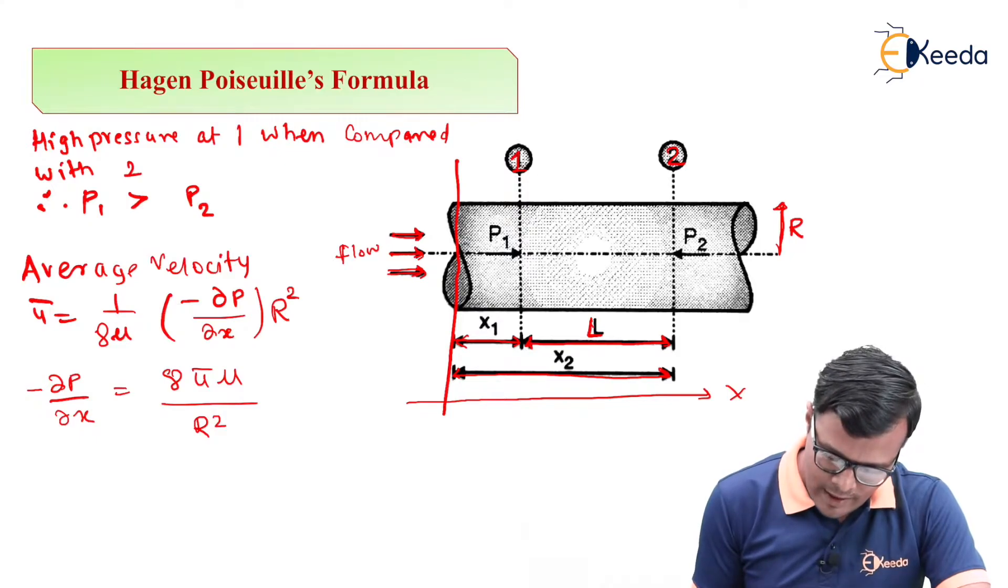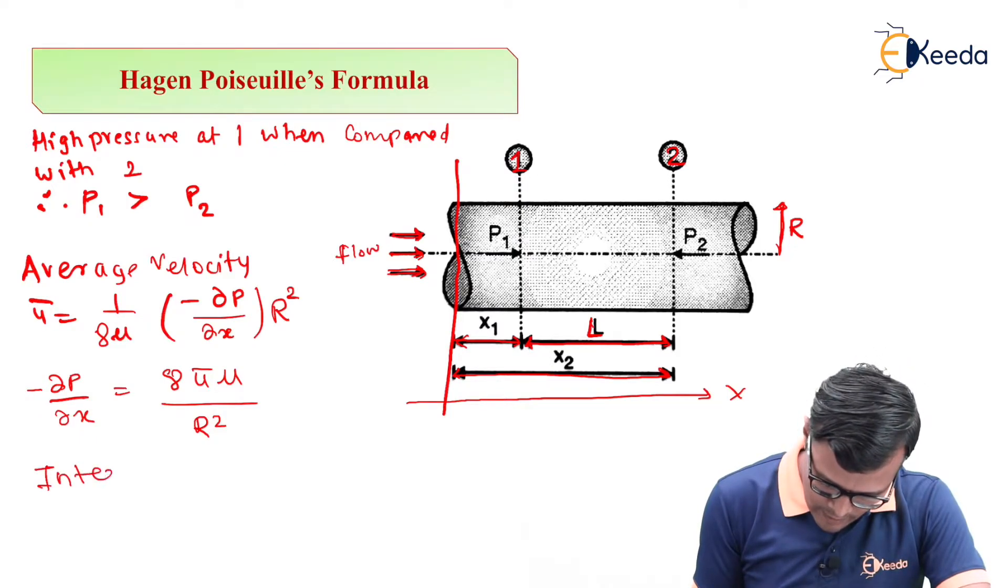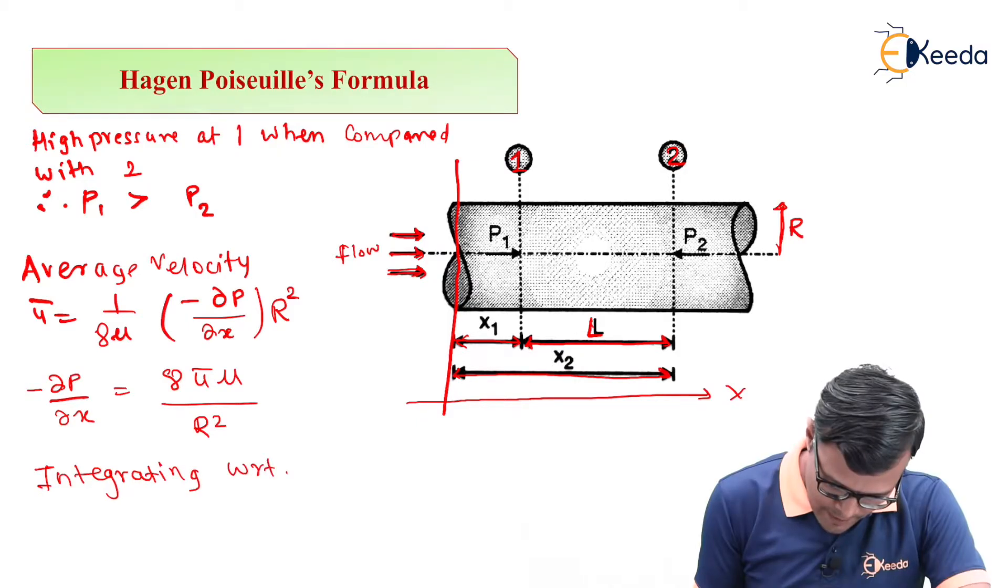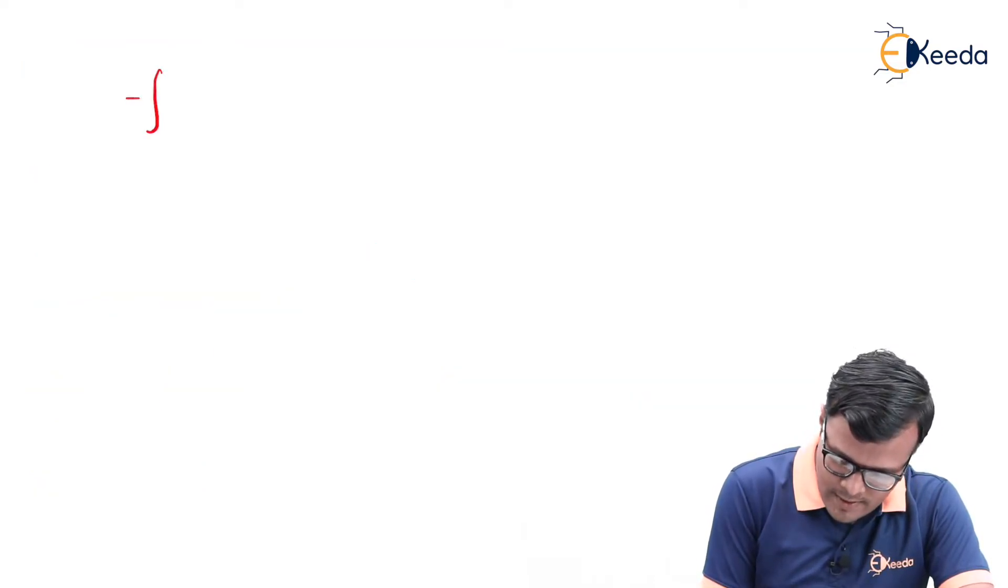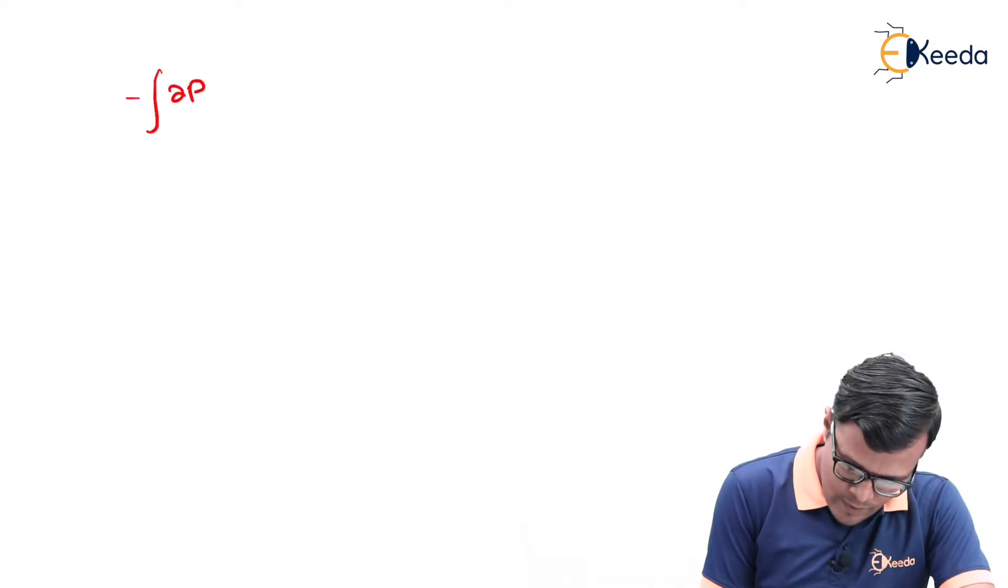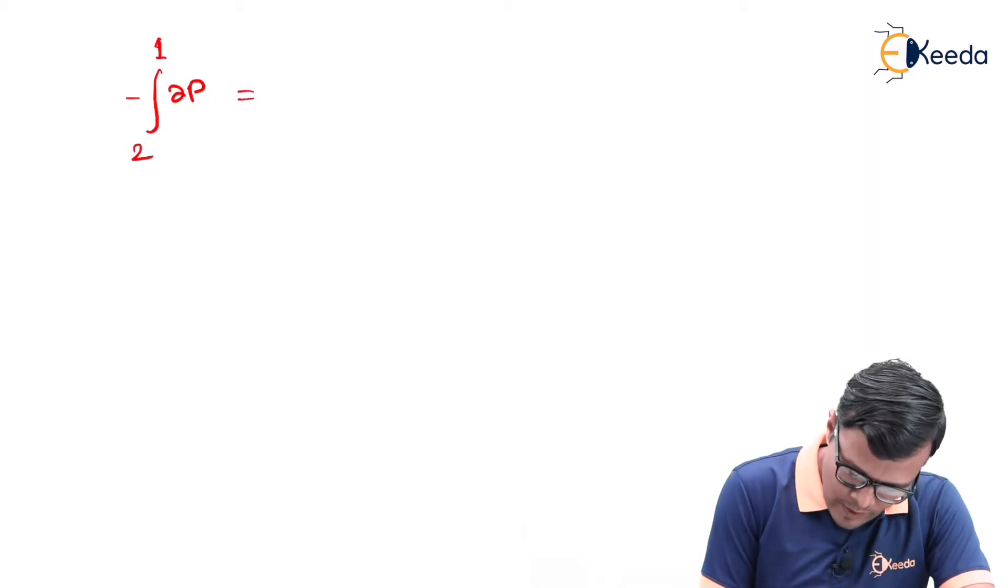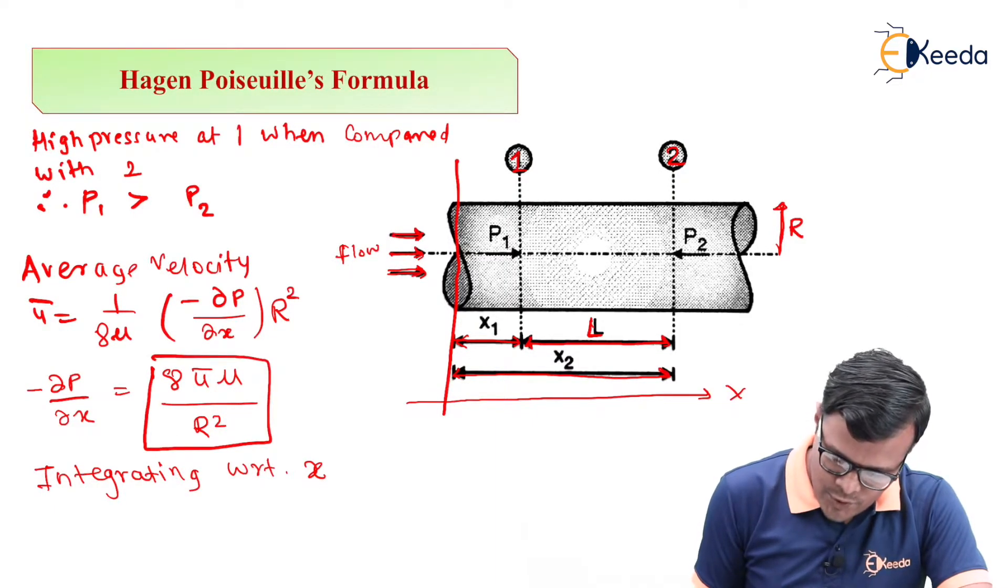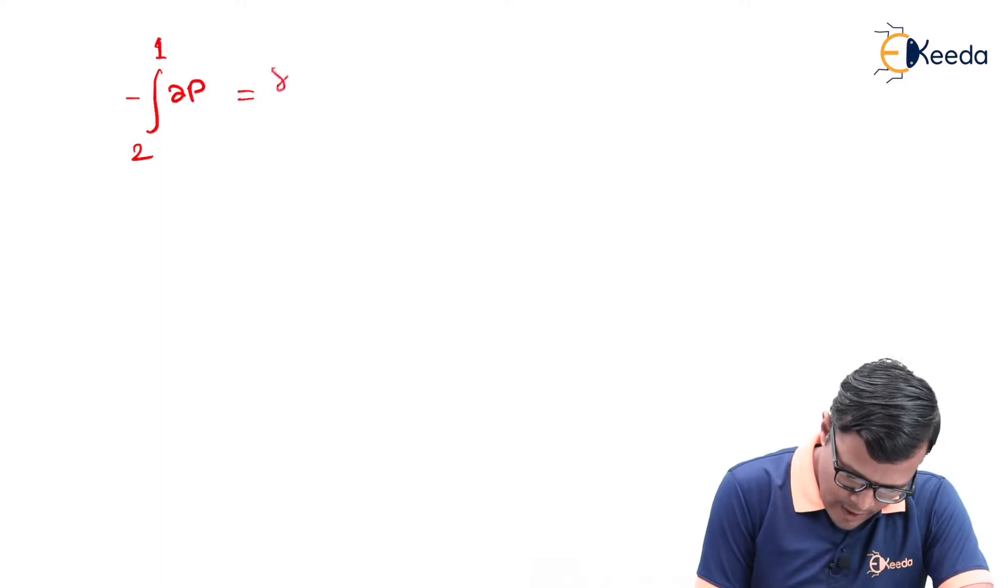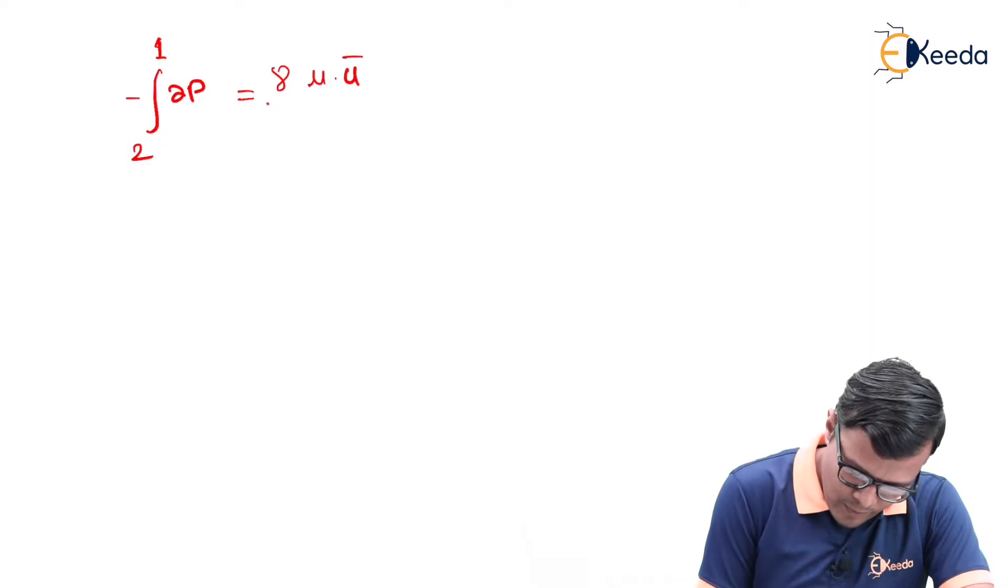If we integrate with respect to x, integrating with respect to x we will have integration of minus dP from point 2 to 1, that is equal to the constant term in this square box, 8 mu into u bar upon R square.